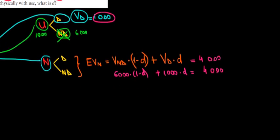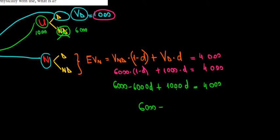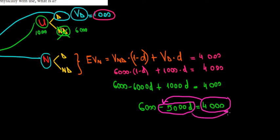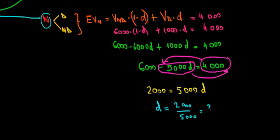Let's expand the brackets: six thousand minus six thousand D plus one thousand D equals four thousand. Combining terms: six thousand minus five thousand D equals four thousand. Rearranging: six thousand minus four thousand equals two thousand, and that equals five thousand D. Therefore D equals two thousand divided by five thousand, which is two-fifths, or zero point four — so forty percent of cars must be defective.